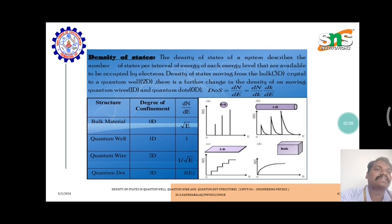The density of states of a system describes the number of states per interval of energy at each energy that are available to be occupied by electrons. Density of states is equal to dN divided by dE.